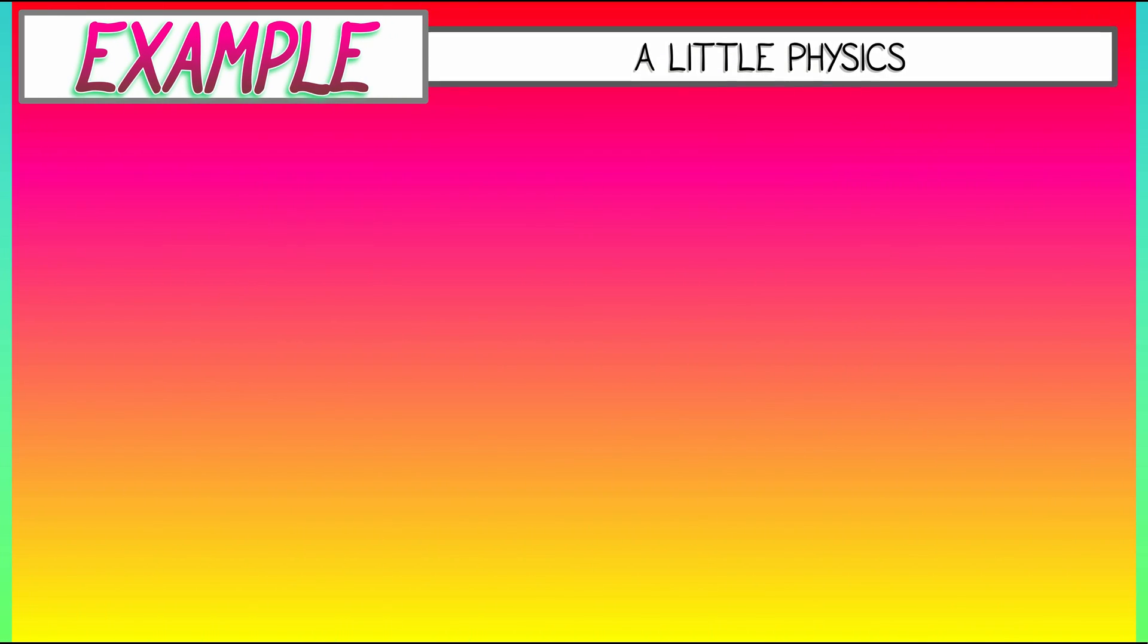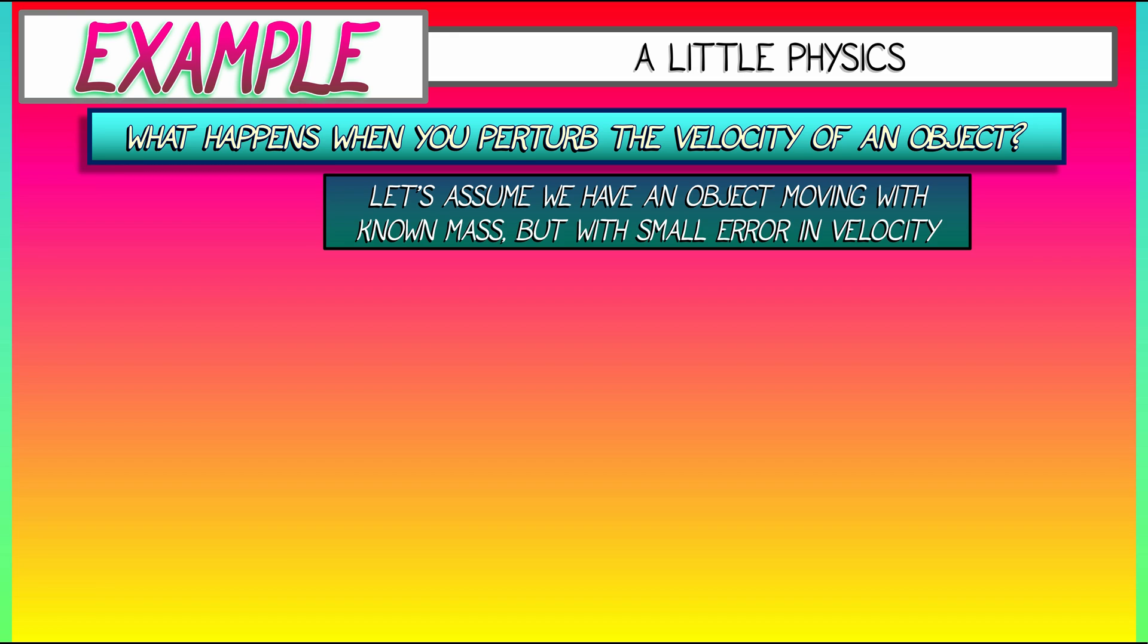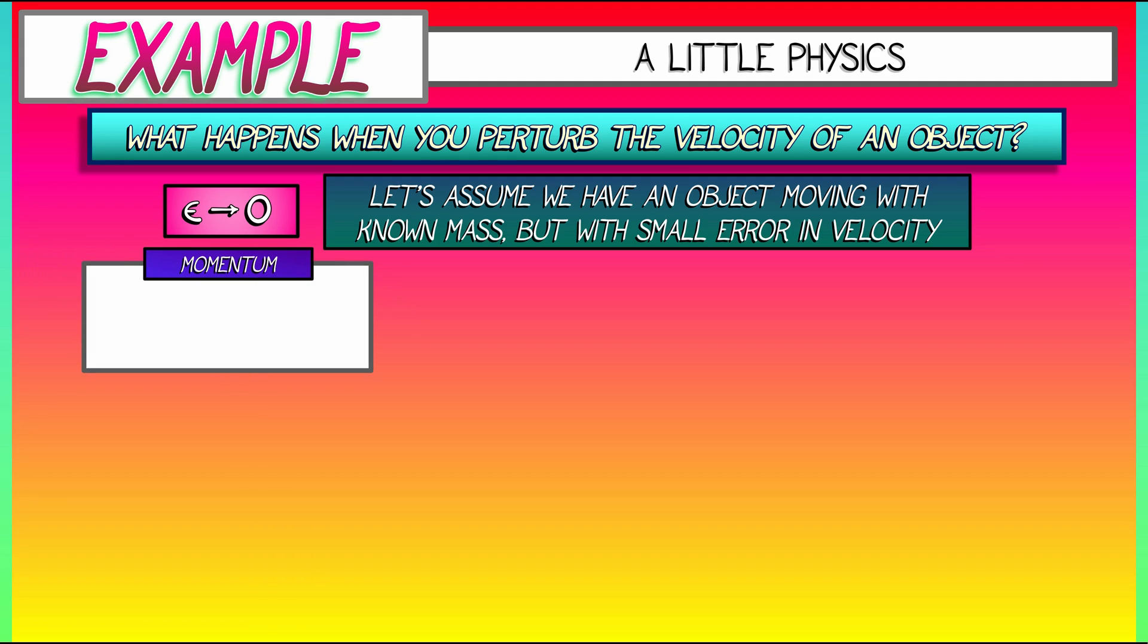Let's do a little physics. What happens when you've got an object and you perturb its velocity? Let's say you've got an object, it's got a known mass, but it's moving at some velocity. You measure that velocity and you just get an estimate for it. We're going to again work in the limit as epsilon goes to zero. And with an epsilon amount of change in velocity, what can you say about the momentum? Recall the momentum, p, is the mass, m, times the velocity, v.